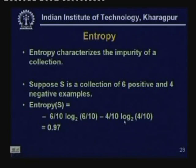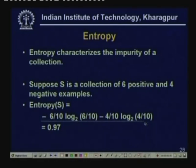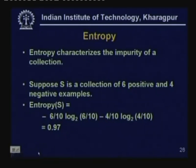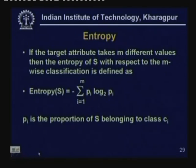So entropy characterizes the impurity of a collection. For example, if S is a collection of 6 positive and 4 negative examples, entropy(S) = -(6/10)log(6/10) - (4/10)log(4/10) ≈ 0.97. If the target attribute takes m different values, entropy with respect to the m-way classification is -Σ Pi log Pi, where Pi is the proportion of S belonging to class Ci.